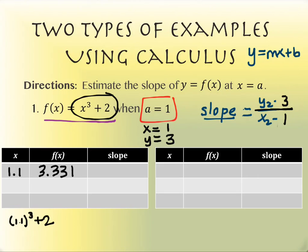Now we're going to do this several times. You can see the way I've set this up — we're going to do this three times here and three more times over here, so six times total. It's not terribly difficult to re-enter this every time, but it would be nice if we didn't have to — if you could just put in the number and it spits out your answer right away. Well, you can do that. So in your calculator, if you have the TI-83, 84, or even an 89, I'd like you to go into your y-equals and make sure you've already put in x cubed plus 2.